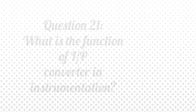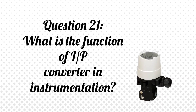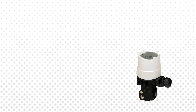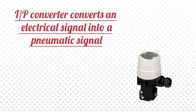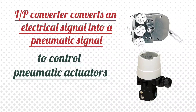Question 21: What is the function of an I/P converter in instrumentation? Answer: An I/P converter converts an electrical signal into a pneumatic signal to control pneumatic actuators.